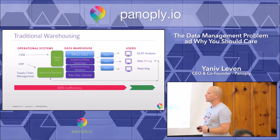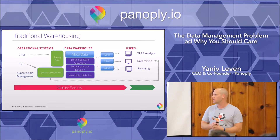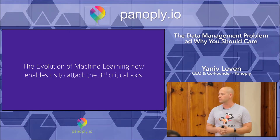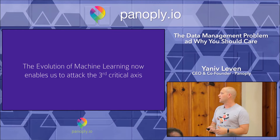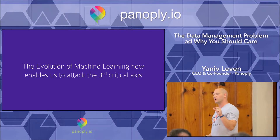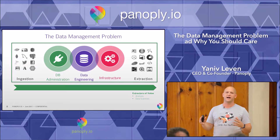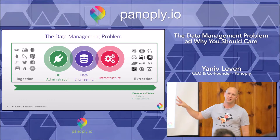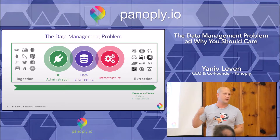So what do we do? What's Panoply's approach? After realizing this core inefficiency, in the past couple of years we've done research and developed machine learning algorithms. This evolution in machine learning basically around data management has enabled us to attack the third axis — the axis of efficiency around the underlying process. Panoply automates and optimizes the data management problem with a set of machine learning algorithms that reside above the storage technologies. These algorithms automate the stack, mimic the work of the DBA, streamline the process to the actual extractor of value, and take the engineer out of the loop as much as possible.